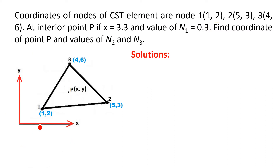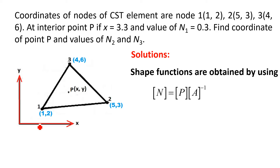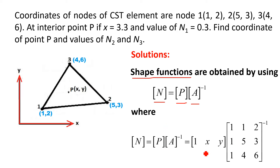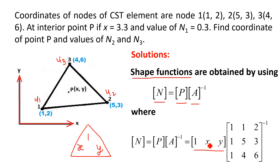Now, solution steps. We know that shape functions can be obtained using the relation N = P · A⁻¹, where N represents the shape functions, P represents the parametric matrix, and A represents the connectivity matrix. P is equal to [1, X, Y] — three elements from the Pascal triangle — because there are three degrees of freedom in X direction (U1, U2, U3) and three in Y direction (V1, V2, V3).